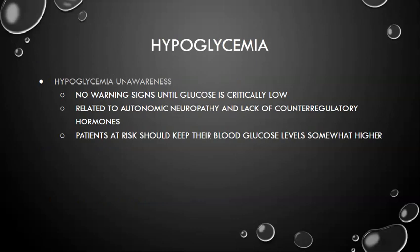With hypoglycemic unawareness, there are no warning signs until blood glucose is critically low. A patient could seem totally fine — not sweating, not tachycardic, no headache — and then suddenly lose consciousness with a blood sugar of 25 or 30, due to autonomic neuropathy and the lack of hormones that normally cause those symptoms. Patients at risk for hypoglycemic unawareness should keep their blood glucose levels a little higher — around 120 — to maintain a buffer.